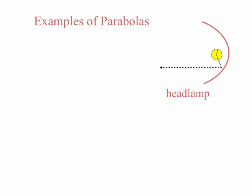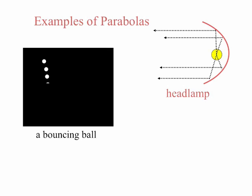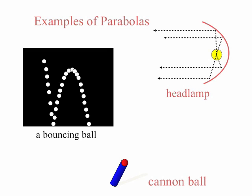Examples of parabolas: we have the way the light reflects off the inner parabola of a headlamp. Over on the left, we have the trajectory of a bouncing ball. Notice how it hits the ground, makes its way back up, and then comes back down in the shape of a parabola. And here at the bottom, we have a cannonball being shot out, also in the parabolic curve.